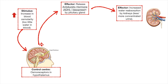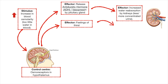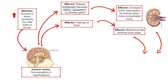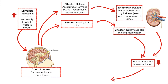The other effect is a behavioral effect: the behavior of drinking water. We feel thirst, and as a result, we drink more water. If you listen to your body and actually drink water when you feel thirsty, both the increasing water intake and the decrease in urine production should reestablish osmolarity and therefore stop the production of antidiuretic hormone.